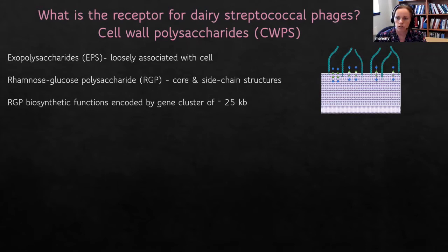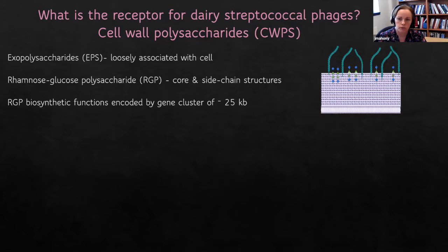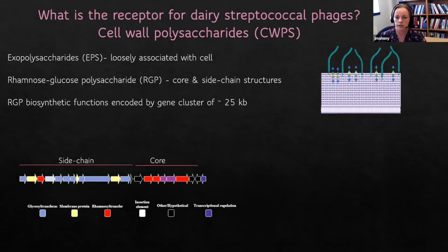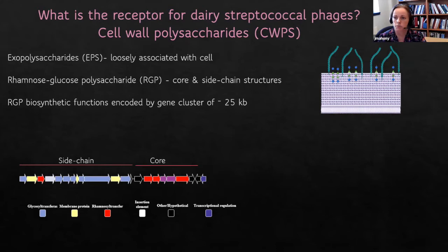The rhamnose glucose polysaccharide, or RGP, is something we've been particularly interested in. These structures are encoded by a gene cluster of around 25 kb. Through mutational analysis and functional genomics, we now understand that these clusters are comprised of two regions: one associated with producing the rhamnan core structure embedded within the peptidoglycan, and the other associated with putting a side chain onto that core — likely exposed on the cell surface and acting as a phage receptor.